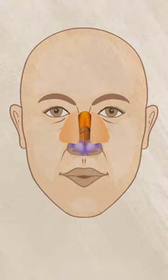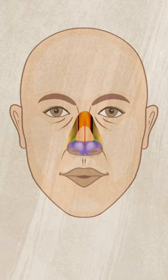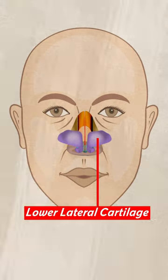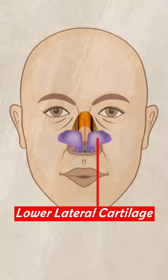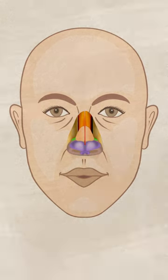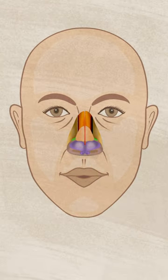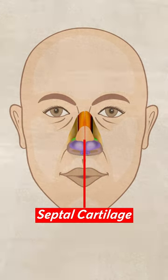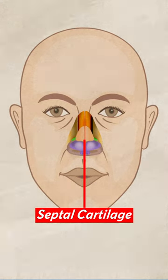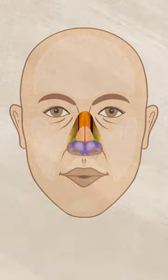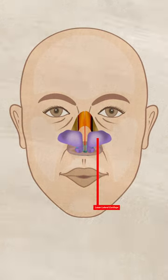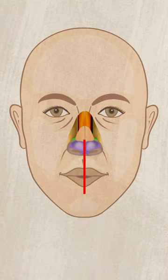The cartilaginous part is made up of the upper lateral cartilage, which is paired. Below that we have the lower lateral cartilage, which is again a paired cartilage, and along with this another paired cartilage which is the sesamoid cartilage. From below, the septal cartilage comes and gives support to the dorsum of the nose, but this is an unpaired cartilage. So basically the bony part is made up of two paired bones and one unpaired bone, and the cartilaginous part is made up of three paired cartilages and one unpaired cartilage.